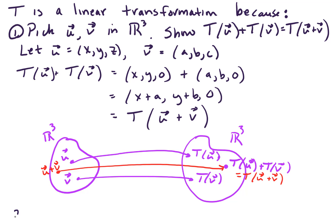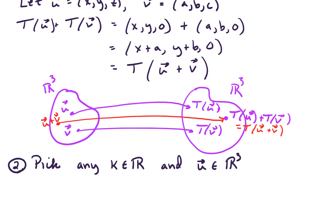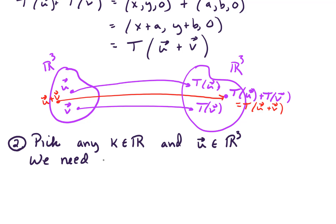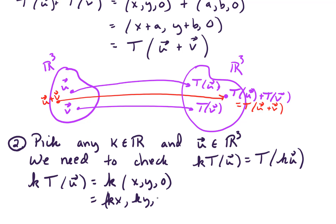The second thing we need to check is that for any scalar k in the real numbers and any vector u in R3, we need to check that k times T of u equals T of k times u. We have k times T of u, and that equals k times x, y, 0. Multiplying k through, we get kx, ky, and 0, and that is certainly T of k times u. So this shows that T is a linear transformation.